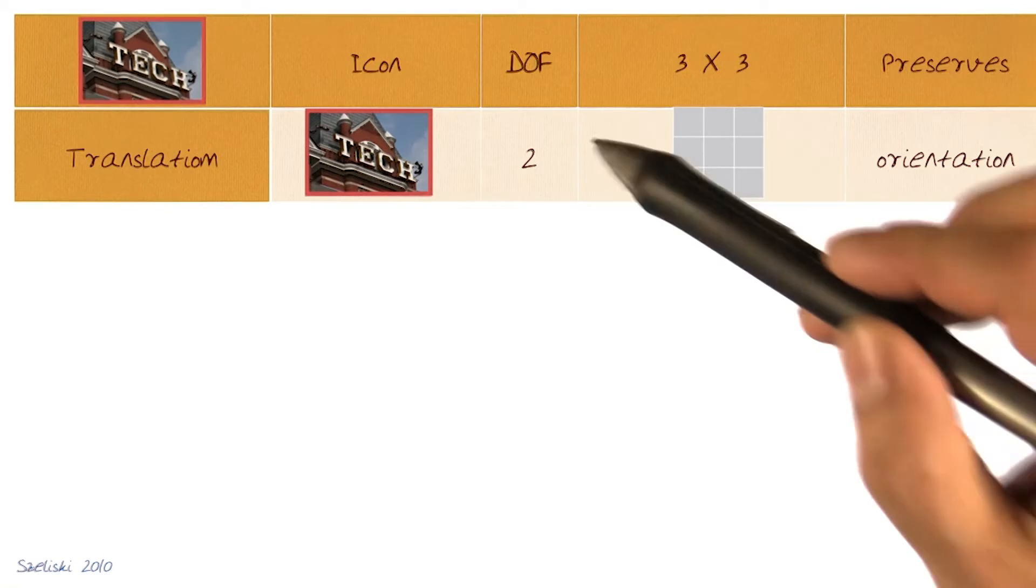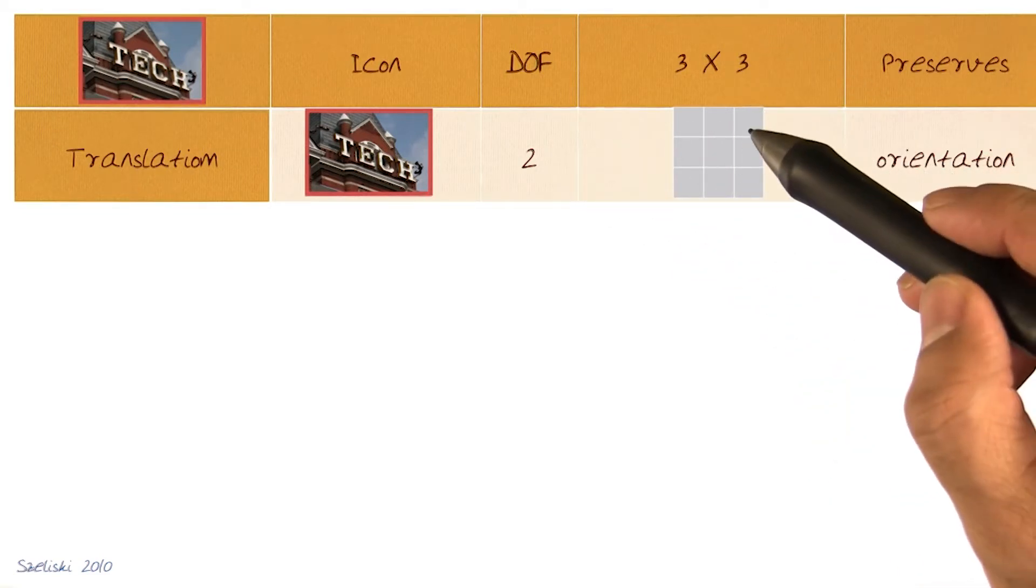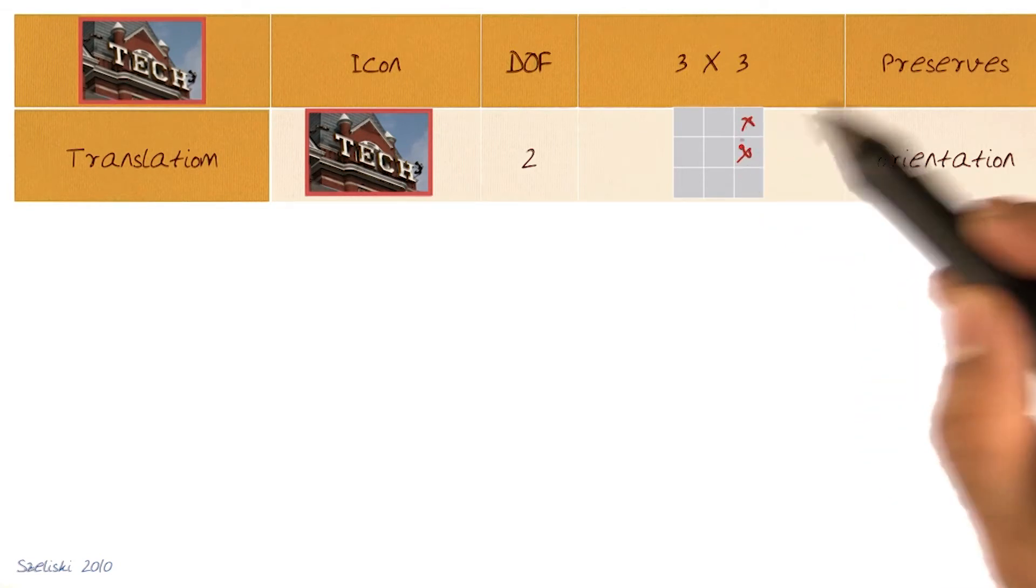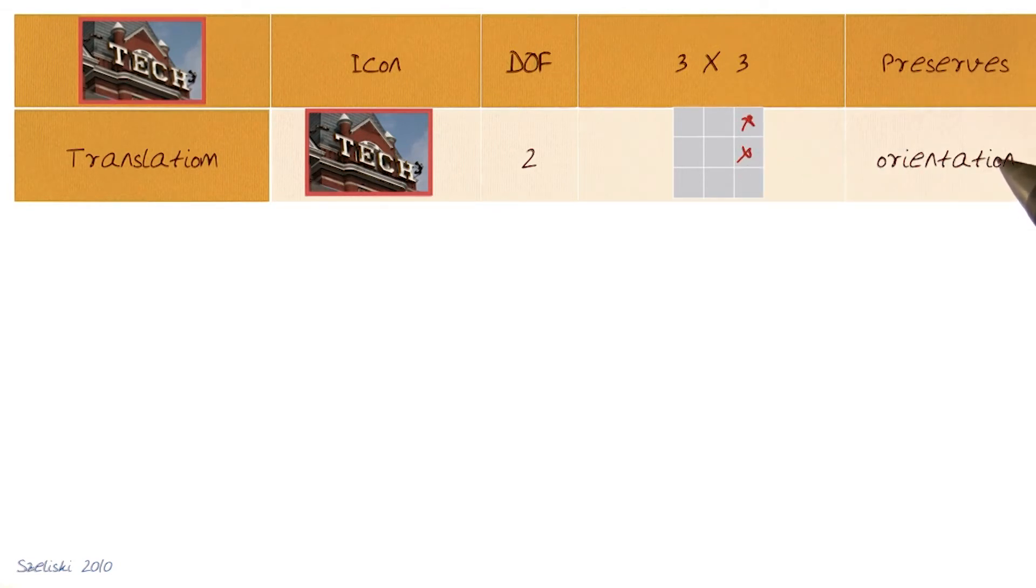Simple translation, two degrees of freedom. We know how to model this. These are the two parameters we would actually be modeling. In this case, you only get translation, orientation is preserved.